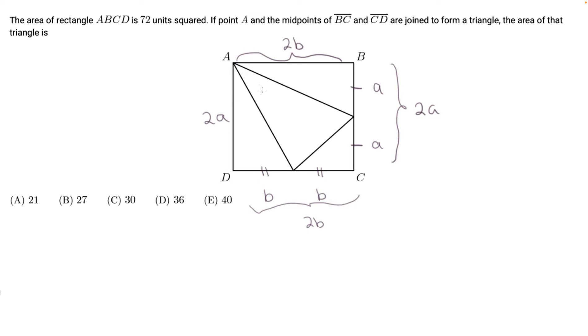To find the area of this triangle, we can take the area of the whole rectangle and subtract the three triangles. So we can find the area of the three triangles and subtract it.